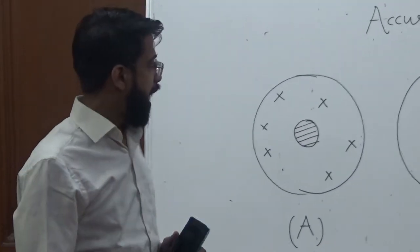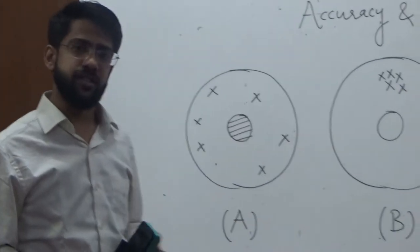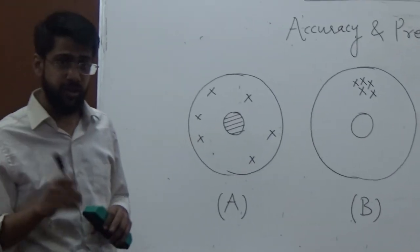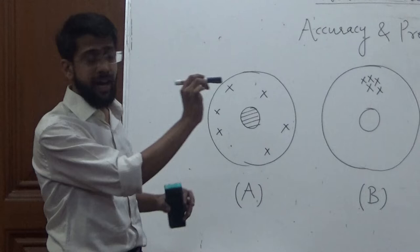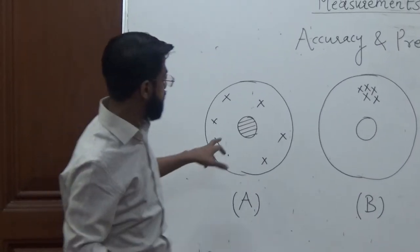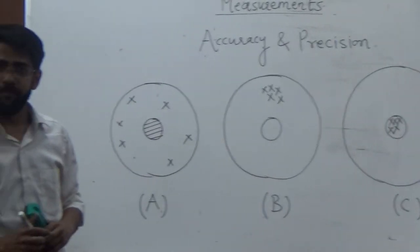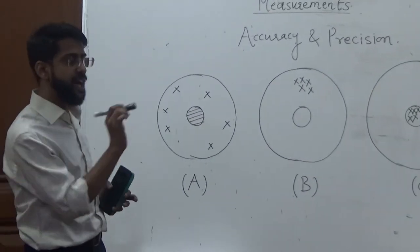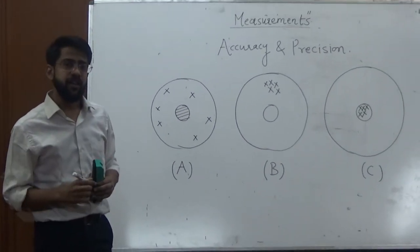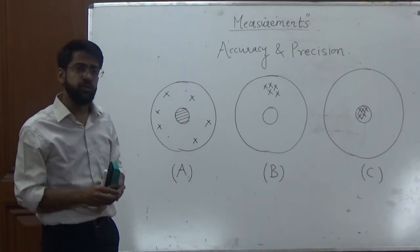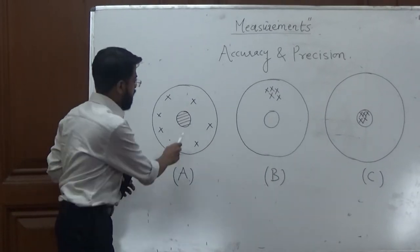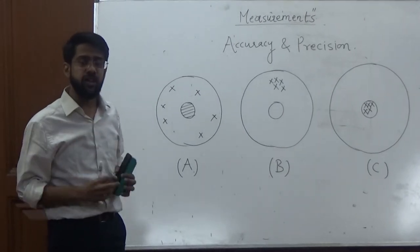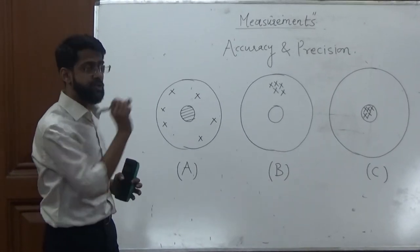For this example I have taken three dart boards. You may have come across dart boards where a player uses arrows to hit a dart, and your objective is to hit in the middle of the dart board. If we assume that the player hitting the arrows is an instrument, the instrument wants to measure the correct value, the actual value. Let's say this middle point is the actual value that the player wants to hit.